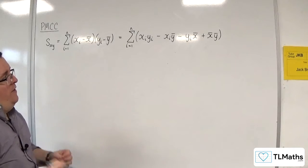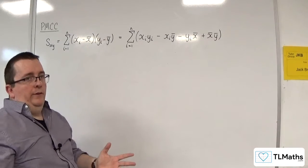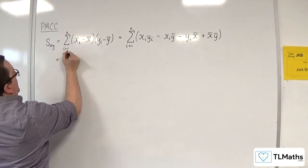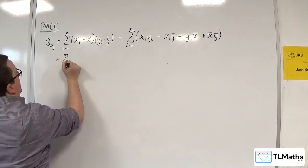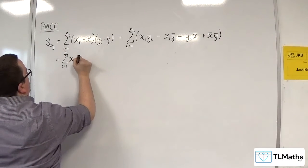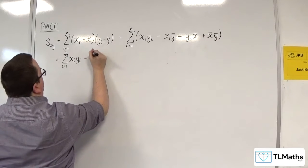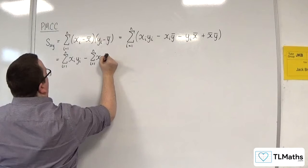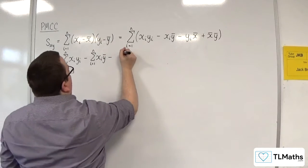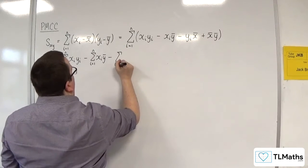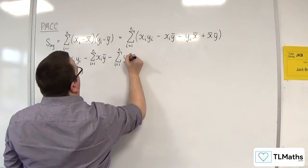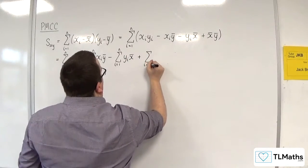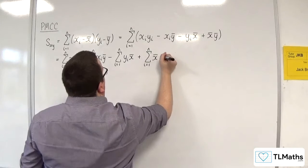I'm then going to split this up into several summations. So I write that as the summation from i=1 to n of x_i·y_i, take away the summation from i=1 to n of x_i·ȳ, take away the summation from i=1 to n of y_i·x̄, plus the summation from i=1 to n of x̄·ȳ.